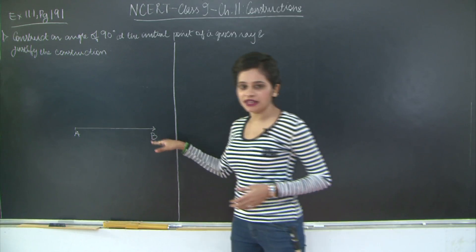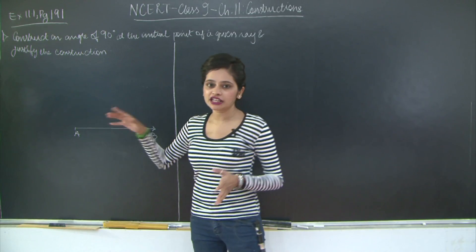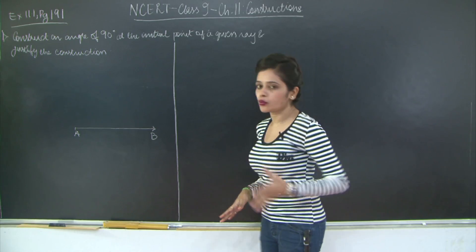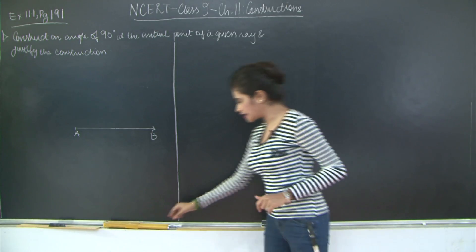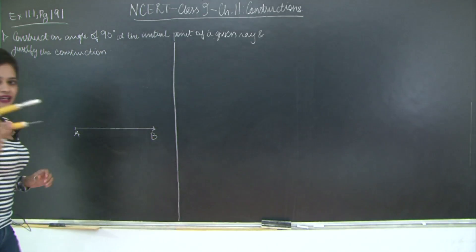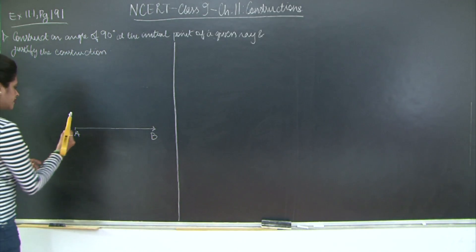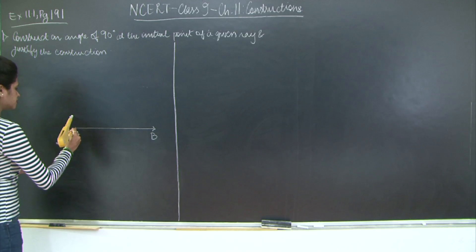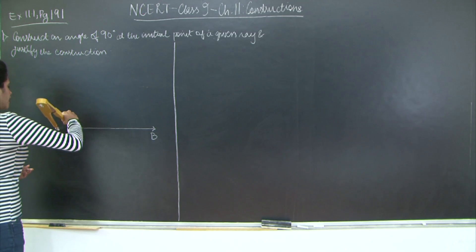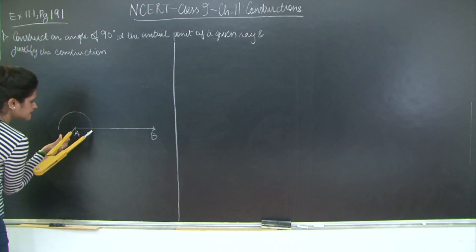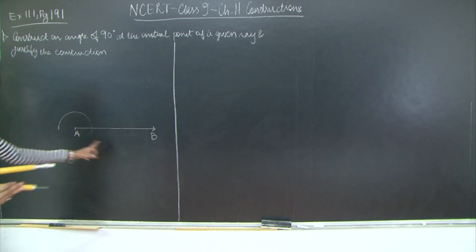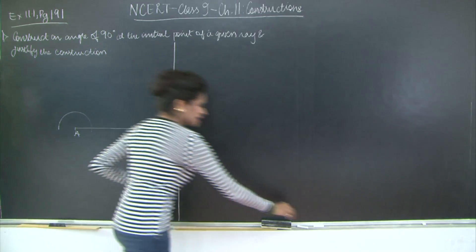So you have a ray AB. At the initial point A, we need to construct an angle of 90 degrees. With A as my centre, I am going to take any length and draw an arc such that it cuts AB at some point D.